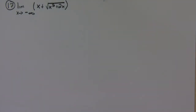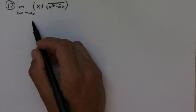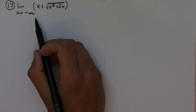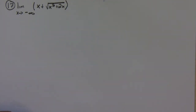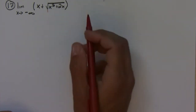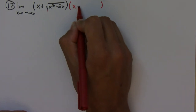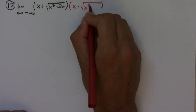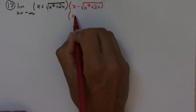This next problem is more difficult. Usually when we take limits to infinity we have a fraction, and with fractions we can use our special trick. So our first goal is to make this expression into a fraction. When we have square roots, we multiply by the conjugate — that seems like a good idea here. So we multiply the numerator and denominator by the conjugate.